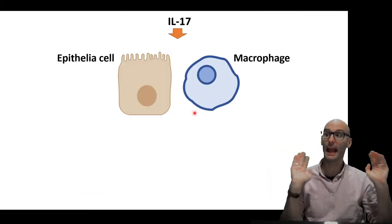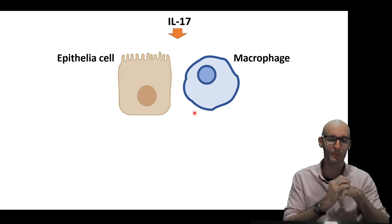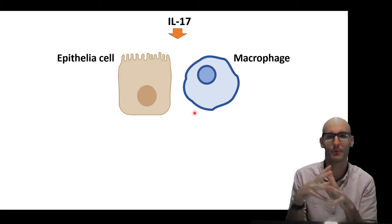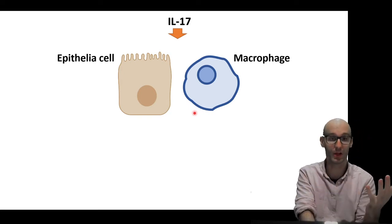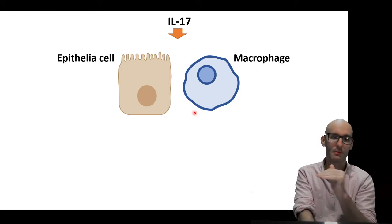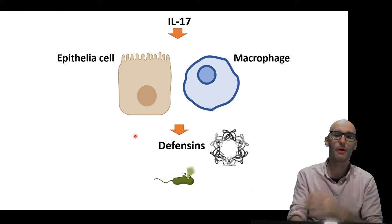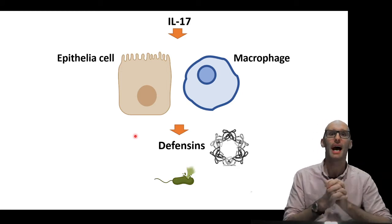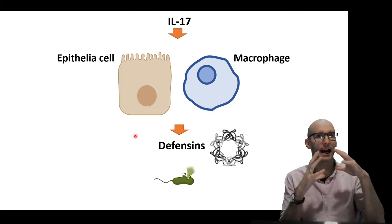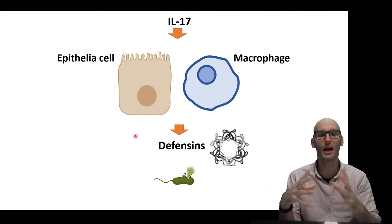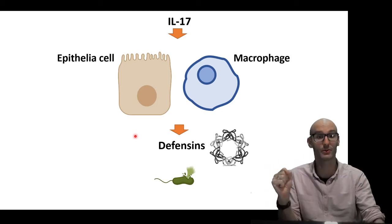Now IL-17 actually acts on quite a few cells. Epithelial cells are a classic kind — so here we've got a lung epithelial cell, for example — and macrophages are another example. Those are two really famous ones that respond to IL-17 through the IL-17 receptor. So IL-17 works on the IL-17 receptor of these two cell types, and it will make them produce antimicrobial compounds. IL-17 induces predominantly antibacterial and antifungal compounds in a huge range of cell types.